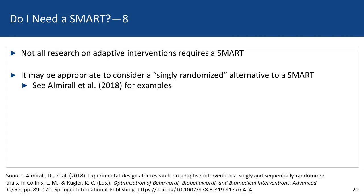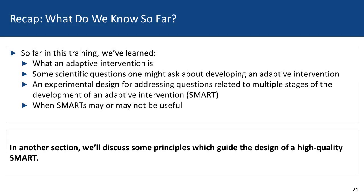The message here is that not all research on adaptive interventions requires a SMART. It may be appropriate to consider a singly randomized alternative to a SMART. There's a chapter by Almeral et al. in the book Optimization of Behavioral, Biobehavioral, and Biomedical Interventions, edited by Collins and Kugler, that walks through this in more detail. So far in this training, we've learned what an adaptive intervention is, scientific questions about developing one, and the SMART design for addressing questions at multiple stages. In another section, we'll discuss principles guiding the design of a high-quality SMART.